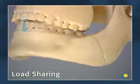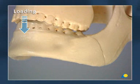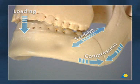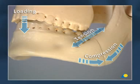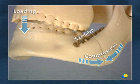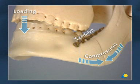Loading across a mandible angle fracture leads to tensional forces at the oblique ridge and compressive forces at the lower border. These tensional forces can be borne by a 2.0 mandible mini plate positioned on the oblique ridge of the mandible. The compressive forces may be borne by the fracture surfaces, particularly at the lower border, provided there is an intact bony buttress.